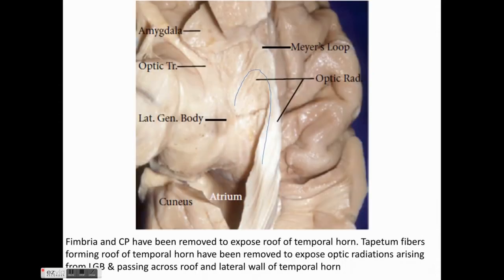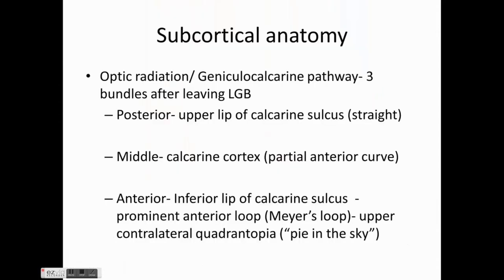With the fimbria and choroid plexus removed, the roof of the temporal horn is exposed. The tapetum fibers form the roof of the temporal horn. These have been removed to expose the optic radiation, allowing visualization of Meyer's loop and the optic radiation, which form an important part of the anatomy of the roof of the temporal horn. Their damage can lead to the 'pie in the sky' visual field defect.